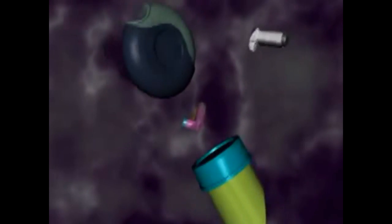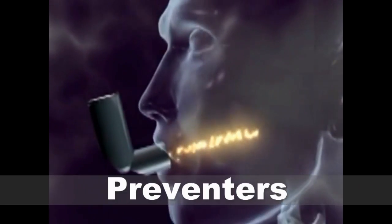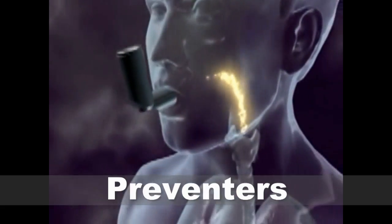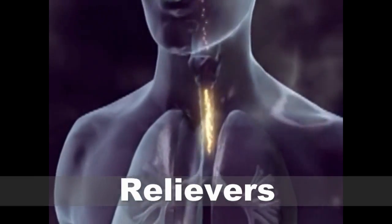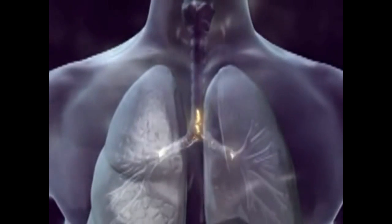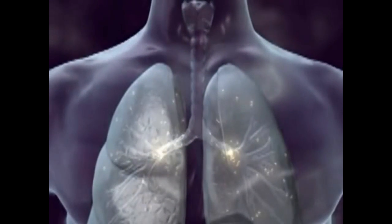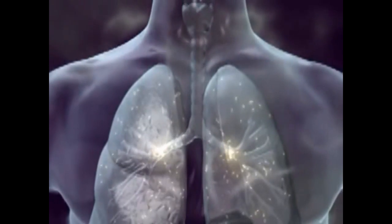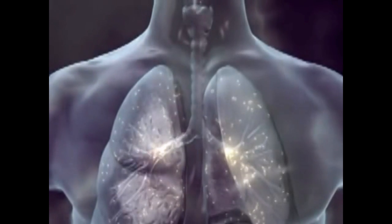Terdapat banyak ubat yang boleh membantu mengawal asma. Secara umumnya, ubat-ubat untuk asma dapat dikategorikan kepada dua jenis. Yang pertama adalah ubat pencegahan atau preventers, dan yang kedua adalah ubat melegakan atau relievers. Preventers berfungsi untuk mencegah serangan asma yang mungkin berlaku di masa hadapan, manakala relievers berfungsi untuk melegakan serangan asma yang sedang berlaku.